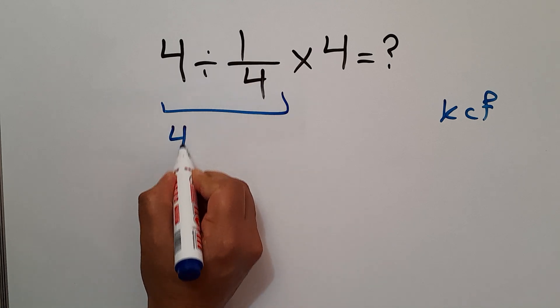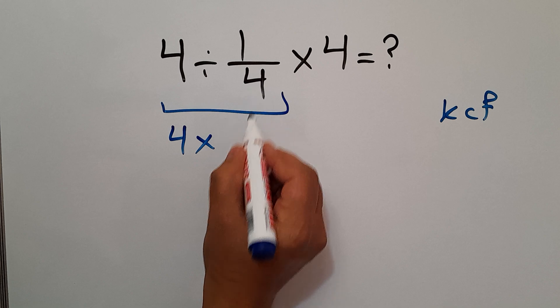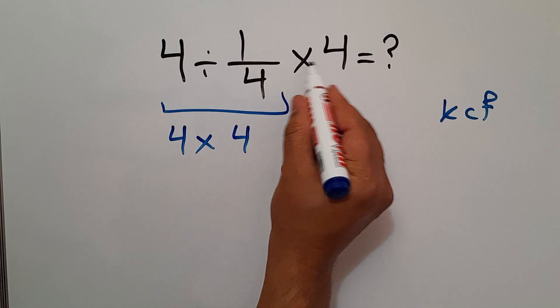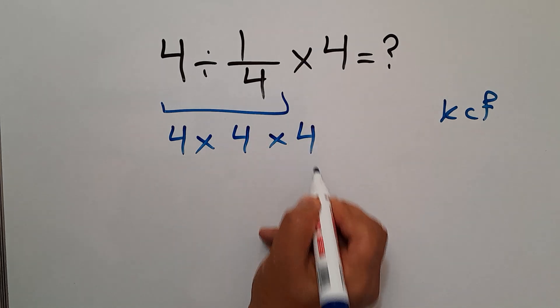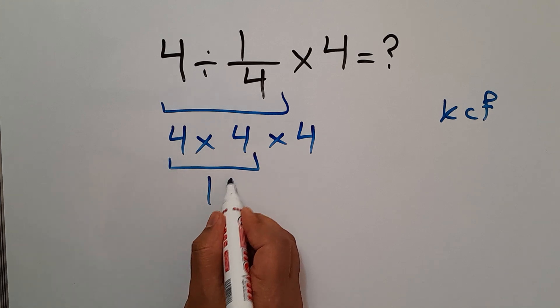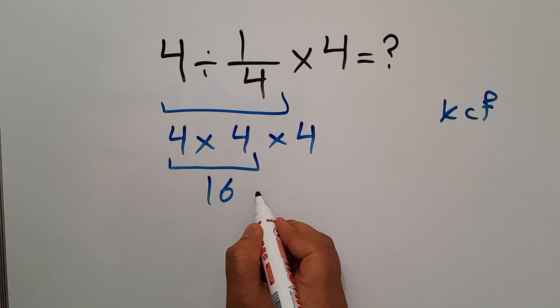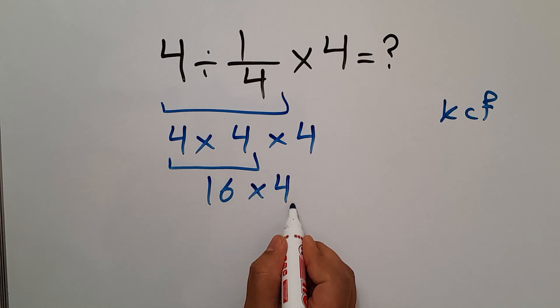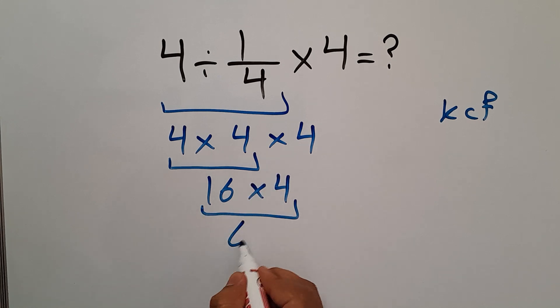We can write 4 times 4 and again times 4. 4 times 4 equals 16, and 16 times 4, which equals 64.